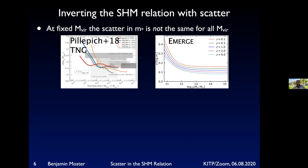One more point before handing over: inverting the stellar-halo mass relation when accounting for scatter. First, there is scatter even at fixed halo mass — the scatter in M_star is not the same for all halo masses. Annalisa has shown for TNG that the scatter at fixed halo mass tends to increase for low halo masses, then stays relatively constant at about 0.15 to 0.20 dex, consistent with satellite kinematics. EMERGE shows the same: fairly constant at high mass, then increasing significantly toward low mass.